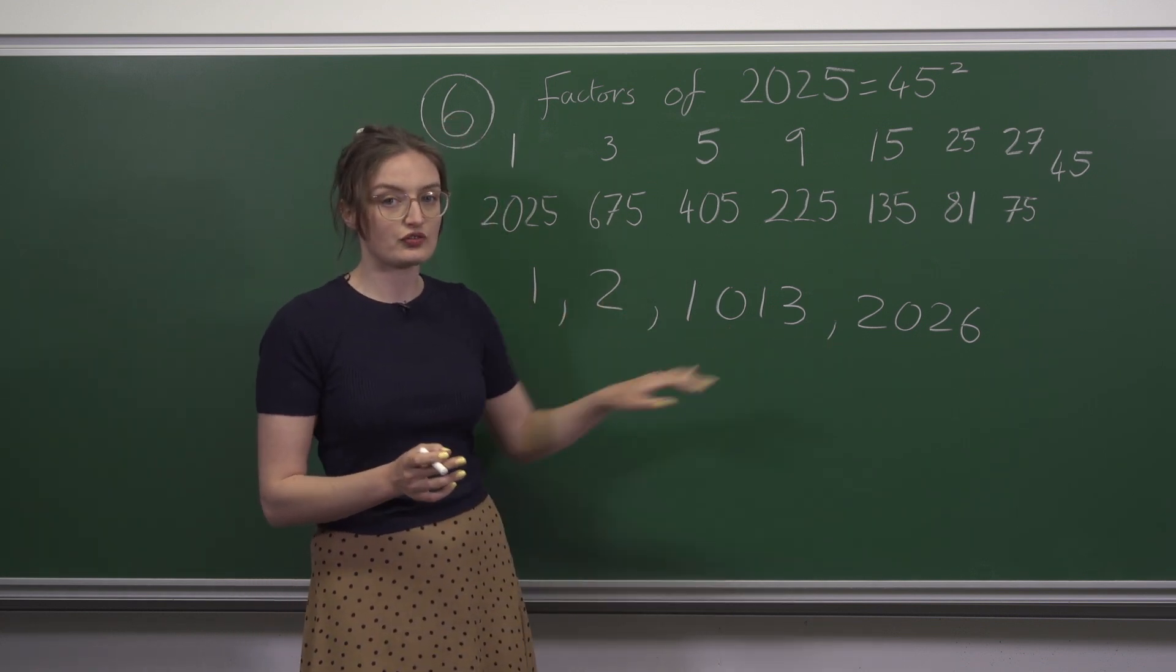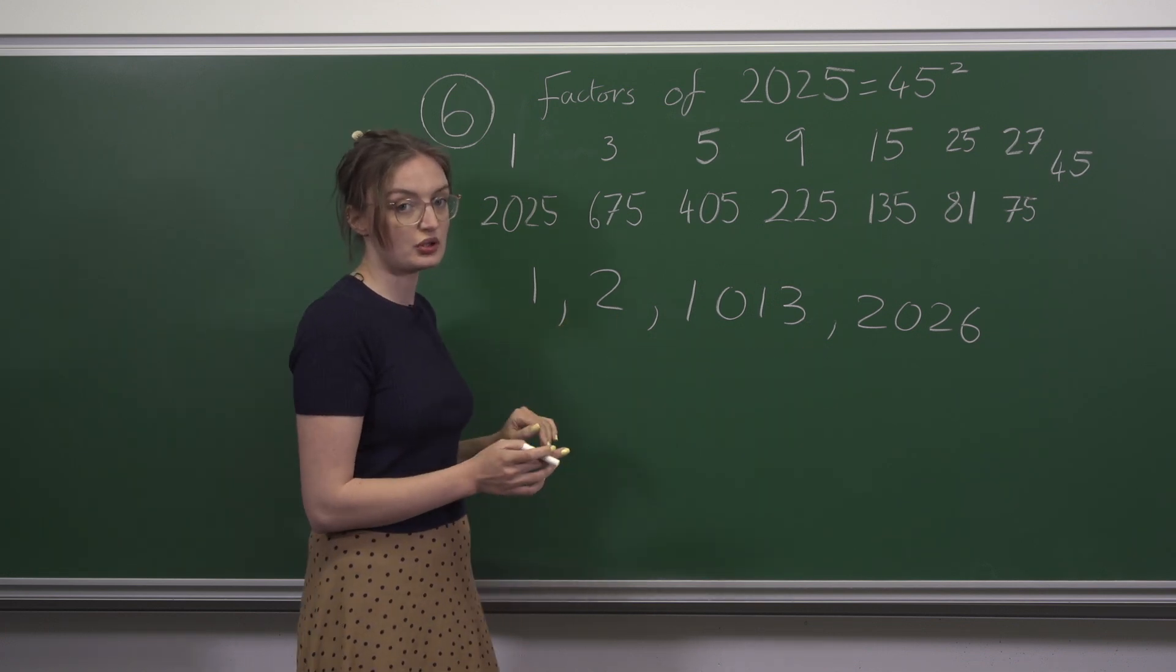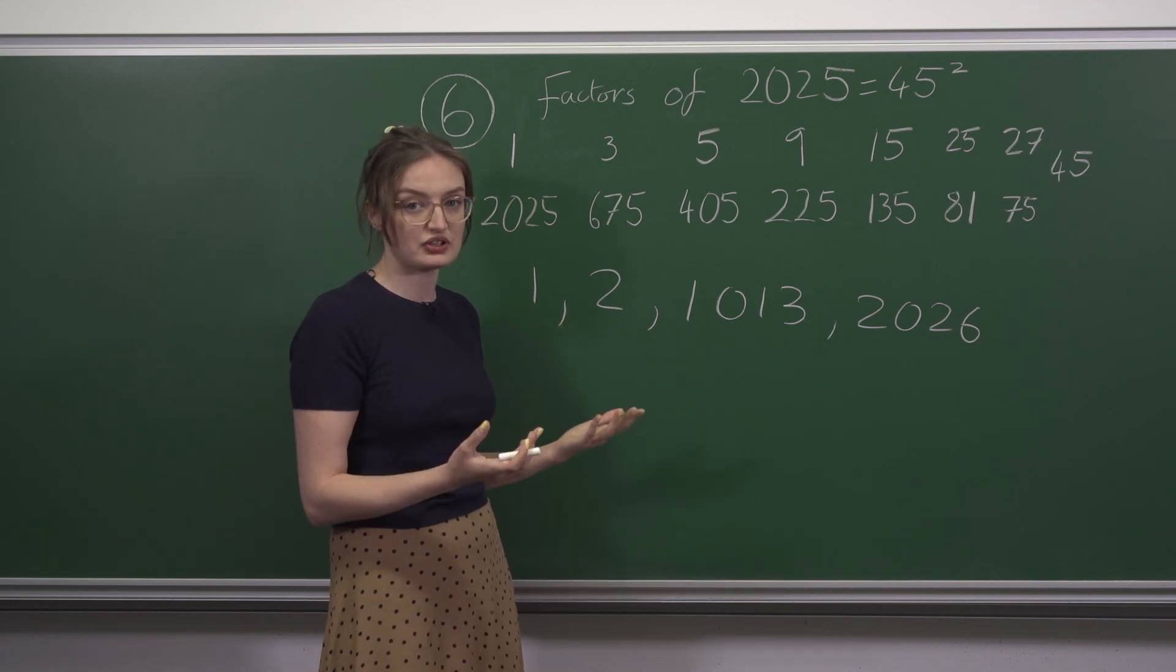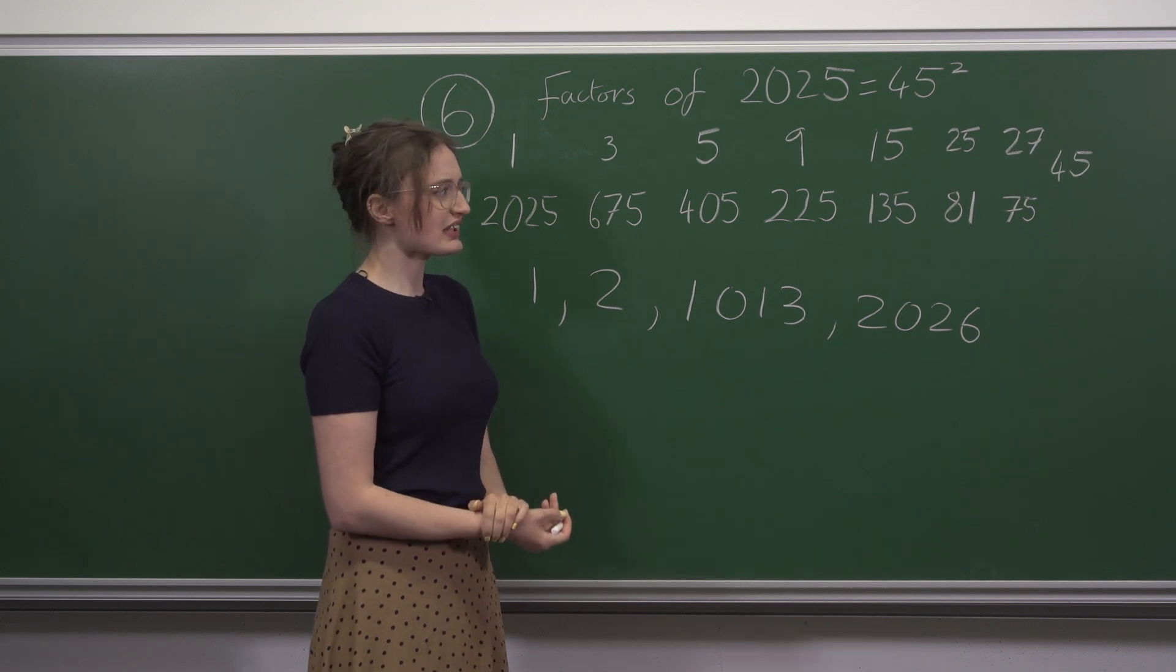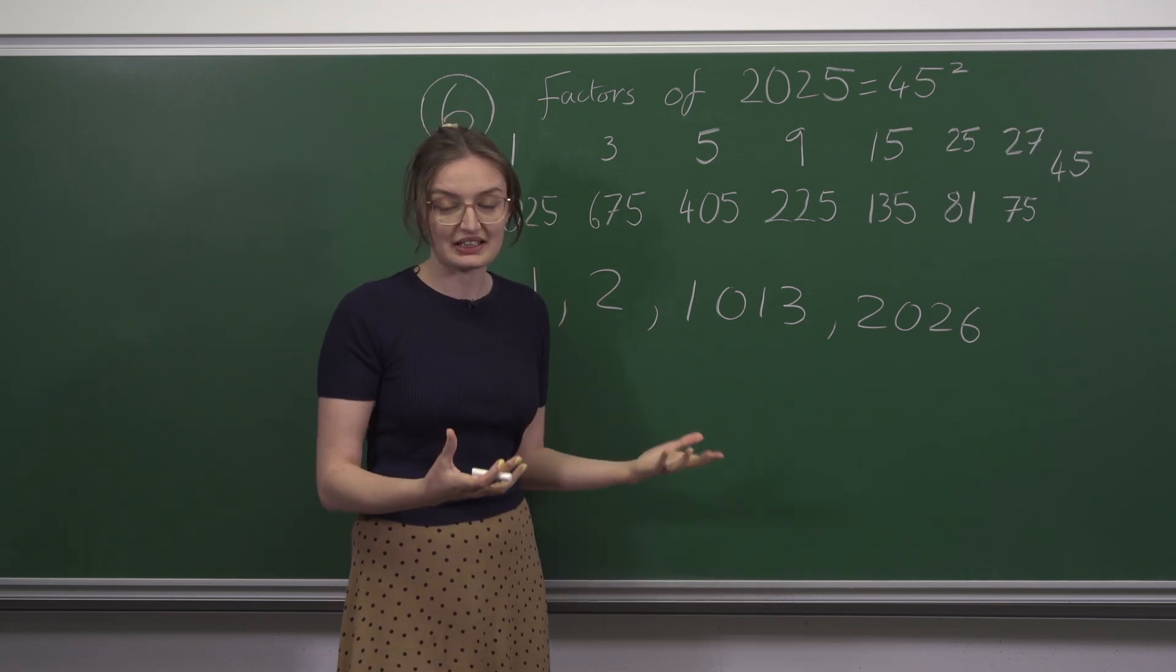So we can just look at the odd factors. There are two of them so when they add together we get an even number. In fact, if we have an even number of odd factors we'll always get an even number.